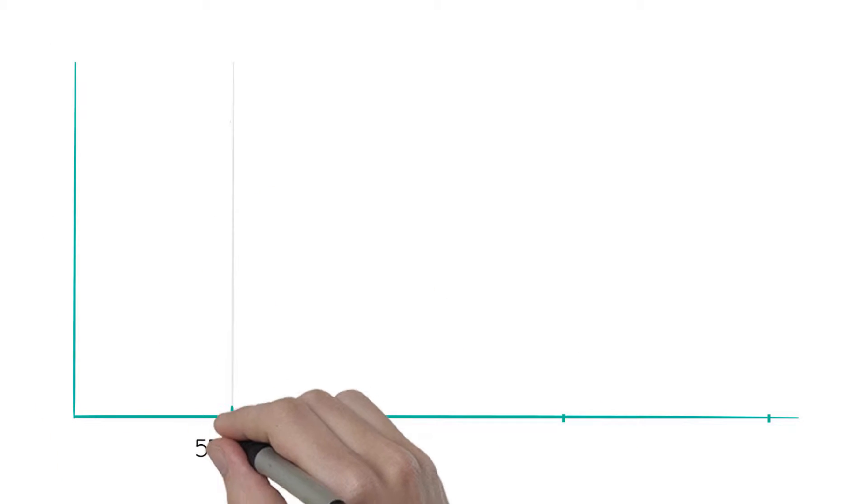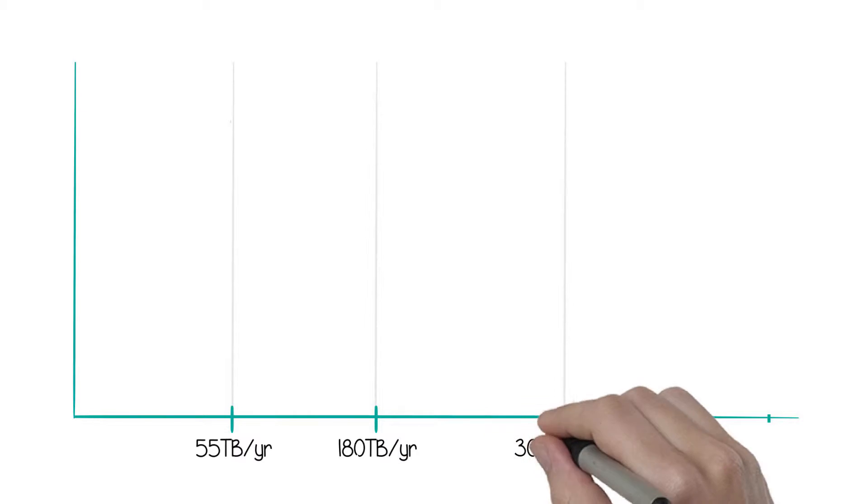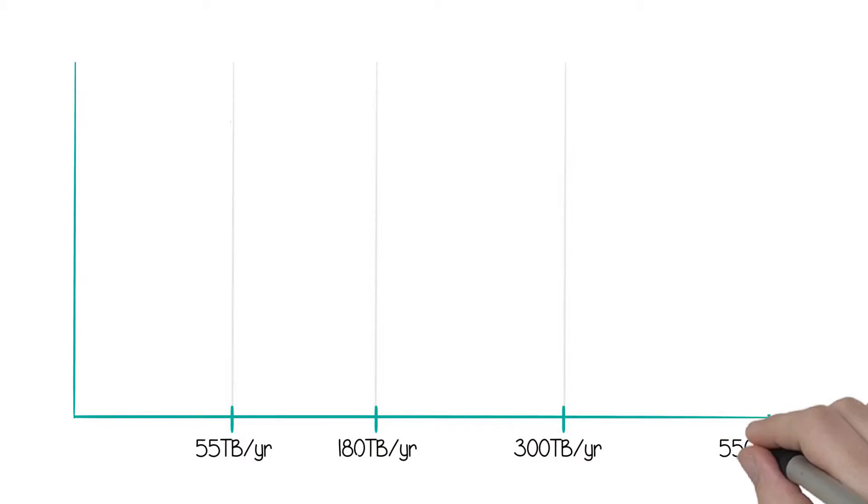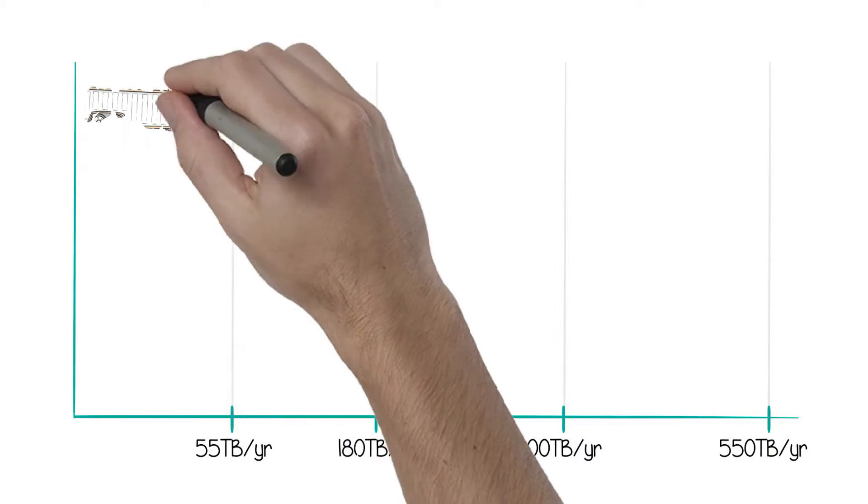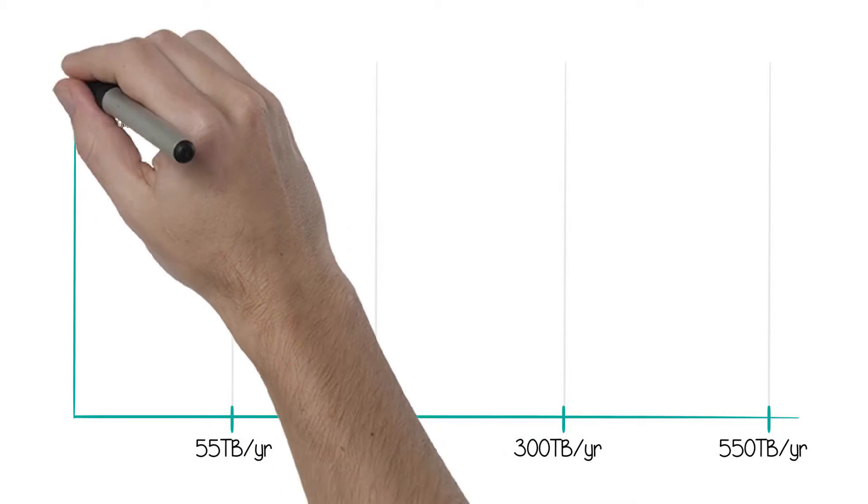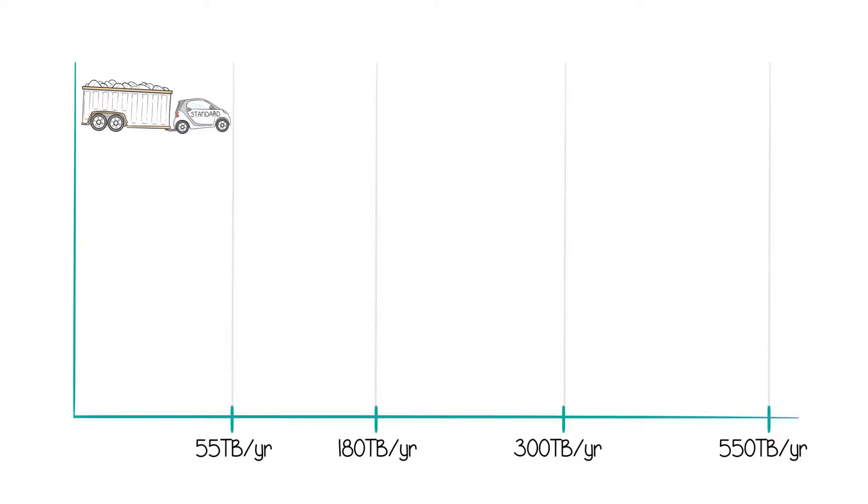Every hard drive has a workload rate limit, defined in part by the number of terabytes a drive can read or write in a year. A standard desktop or laptop drive easily handles about 55 terabytes per year when it's being used eight hours a day, five days per week.